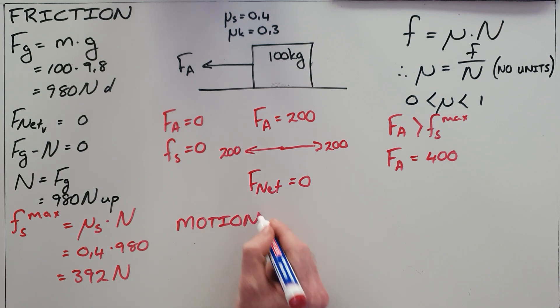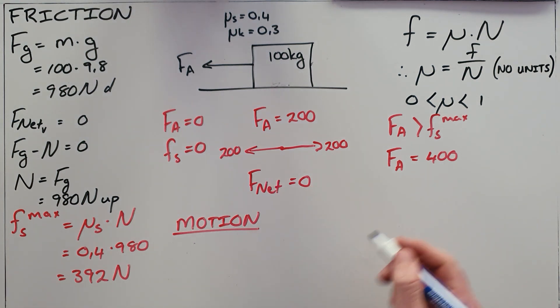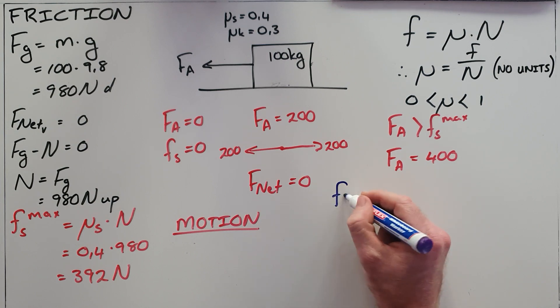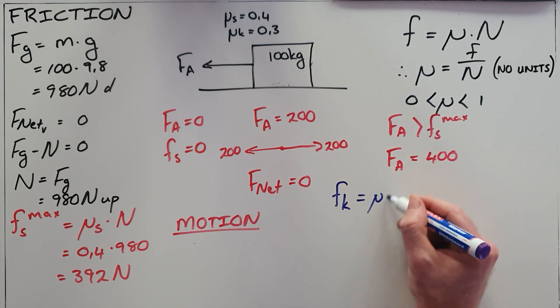As soon as the object is in motion, static friction no longer applies. The only friction that now applies is known as kinetic friction, which can be calculated by taking the coefficient of kinetic friction.